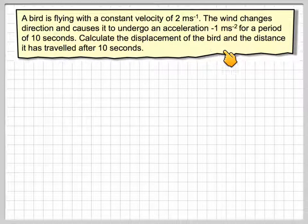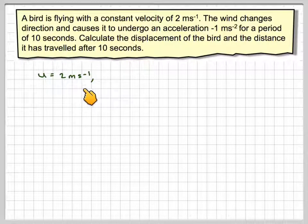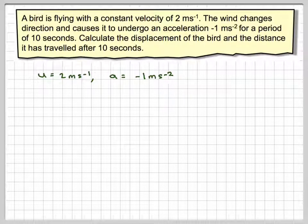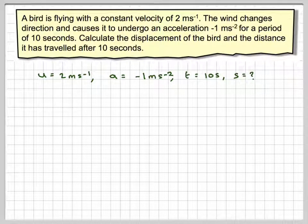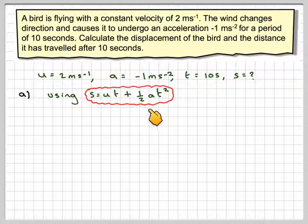Calculate the displacement of the bird and the distance it has travelled after 10 seconds. If we put down that U is 2 metres per second, A is minus 1 metres per second squared, T is 10 seconds, and S is the displacement we don't know. If we use S is equal to UT plus a half AT squared,